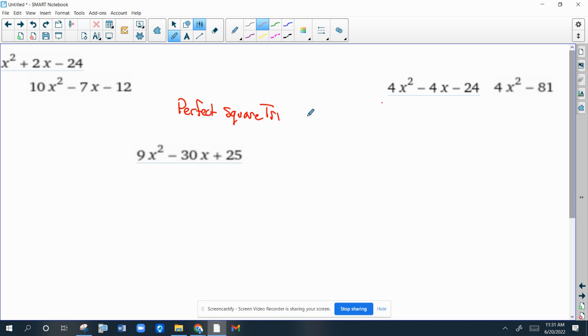And you know it's a perfect square trinomial, if the first and last terms are perfect squares, and they are. So, 9x squared is a perfect square because it's 3x quantity squared. 25 is a perfect square because it's 5 squared. Now, if you multiply those two terms, the 3x and the 5, and then double it, it's a perfect square trinomial. If that result is that middle term. In other words, 5 times 3x is 15x. 15x doubled, or just times 2, is 30x. That's the middle term.